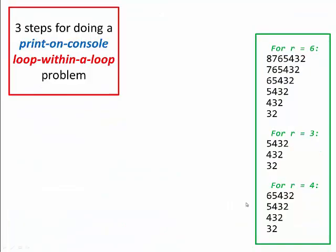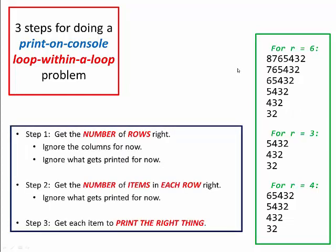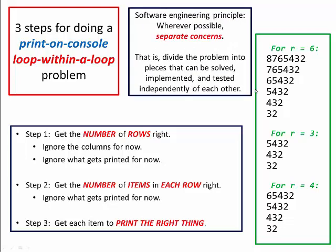To summarize, there are three steps for these loop-within-a-loop printing problems: step one, get the number of rows right; then and only then, step two, get the number of items in each row right; then and only then, step three, print the right things — prior to that, just print asterisks. This is a classic example of the critical software engineering principle: whenever possible, separate concerns — divide the problem into pieces that can be solved, implemented, and tested independently of each other. Applying this technique will make your printing problems much easier.